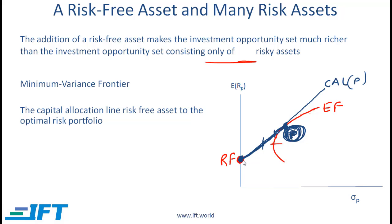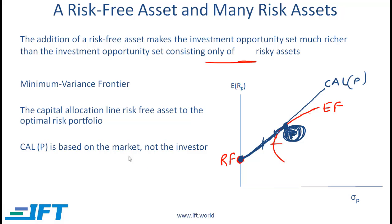In the example seen earlier we just had two assets — the risk-free asset and another asset. Here P represents a bundle of assets, but conceptually what we have discussed is extremely similar to what we talked about before. Another point is that the capital allocation line is based on the market, not the investor. On the next slide we will introduce indifference curves related to the investor.